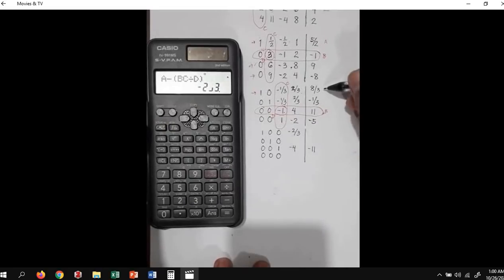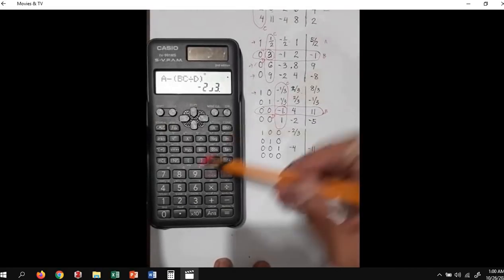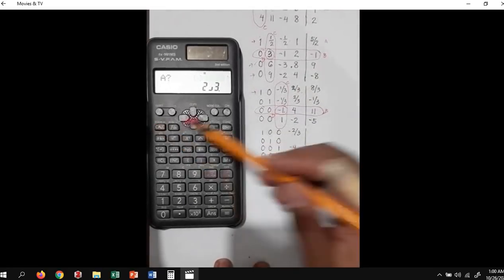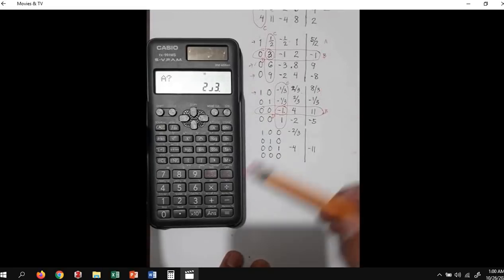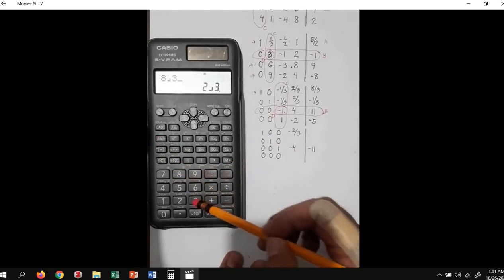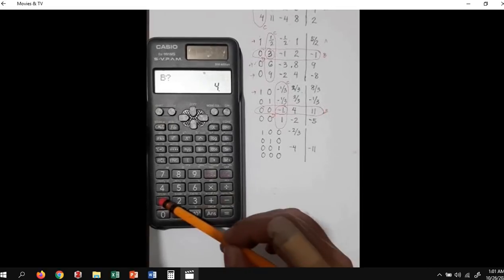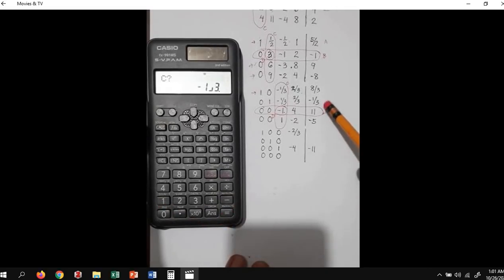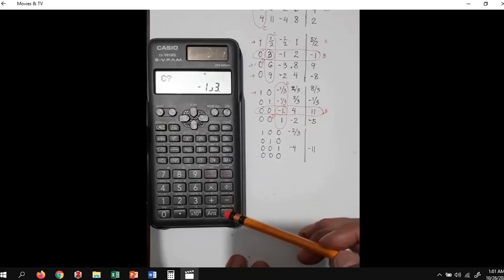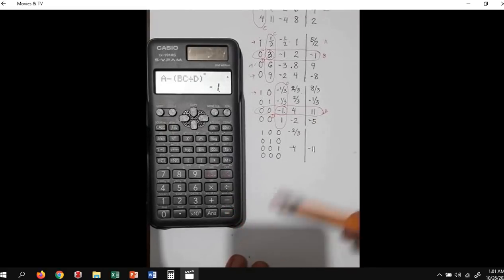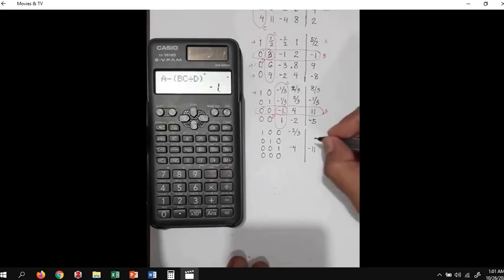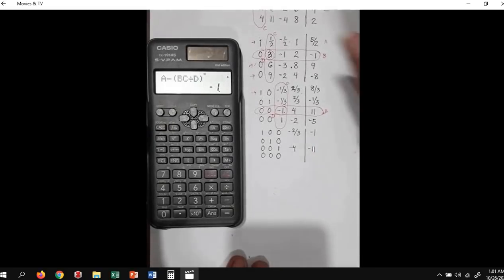Press the calc function again. A is 8 over 3. B is 11. C is negative one-third, equals, correct, equals. So our value is negative 1.